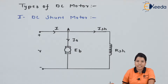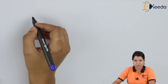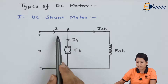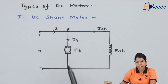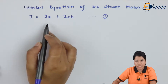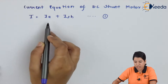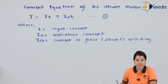Let us derive the current, voltage, and power equation for DC shunt motor. First, let us see the current equation. When the supply voltage V is given, the current I gets divided into two currents, that is Ia and Ish. Hence, the current equation for DC shunt motor can be written as I = Ia + Ish, where I is the supply current, Ia is the armature current, and Ish is the current in shunt winding.